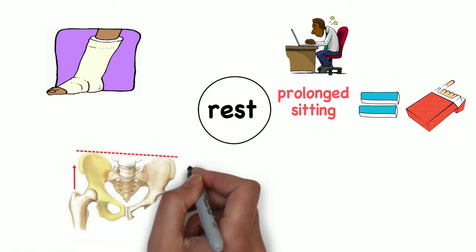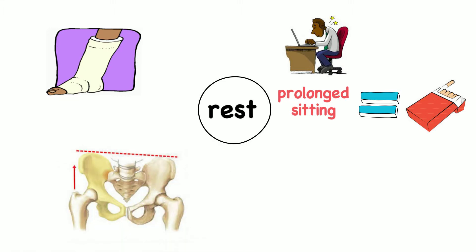Postural imbalances can also lead to trigger points. Apart from sitting at the desk hunched over all day, having a simple thing as an uneven pelvis can shorten muscles on one side while you sit.